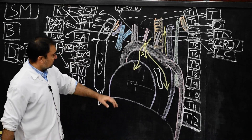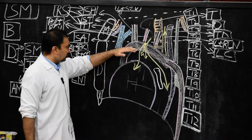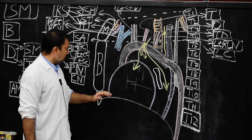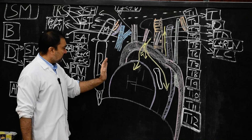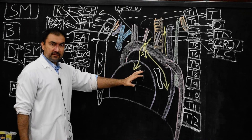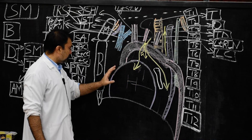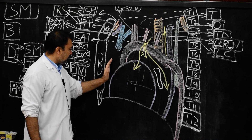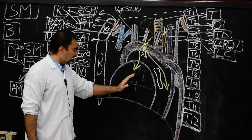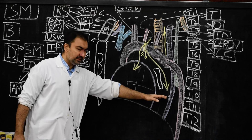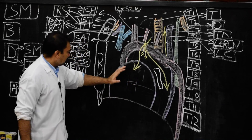Here we come up with the structures present in inferior mediastinum. As we know, inferior mediastinum is divided into three different parts: the anterior mediastinum, middle mediastinum, and posterior mediastinum.